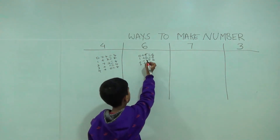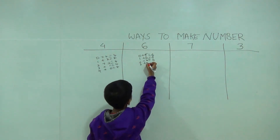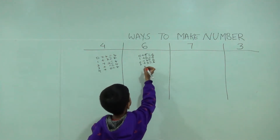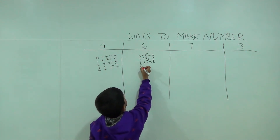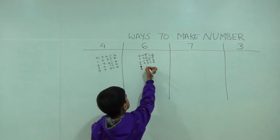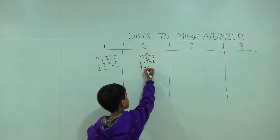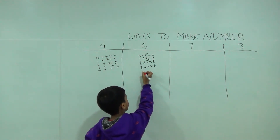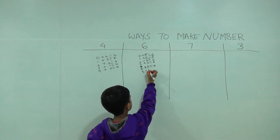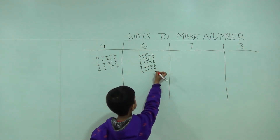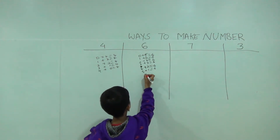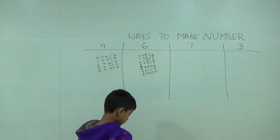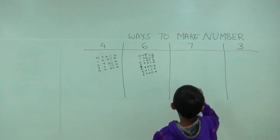Three plus three is equal to six. Four plus two is equal to six. Five plus one is equal to six. Six plus zero is equal to six.